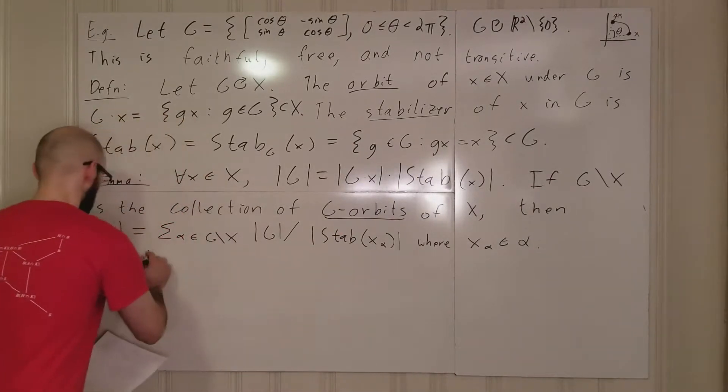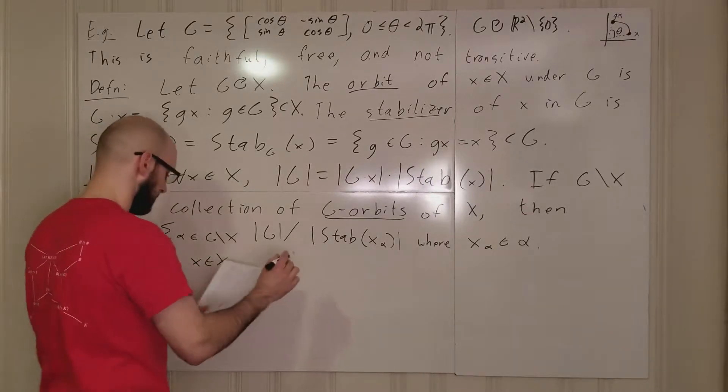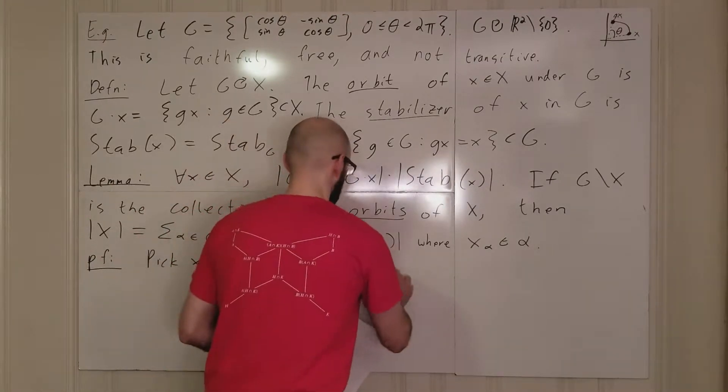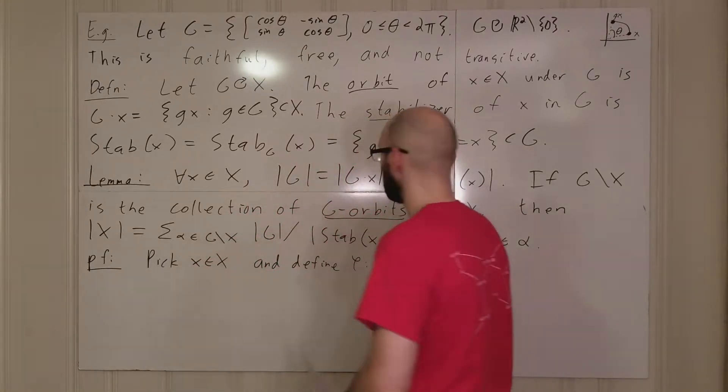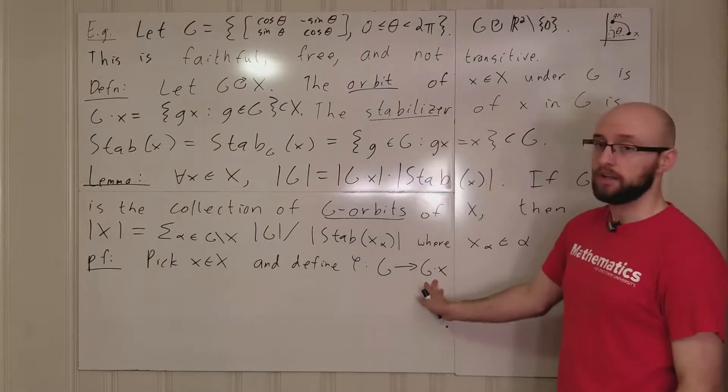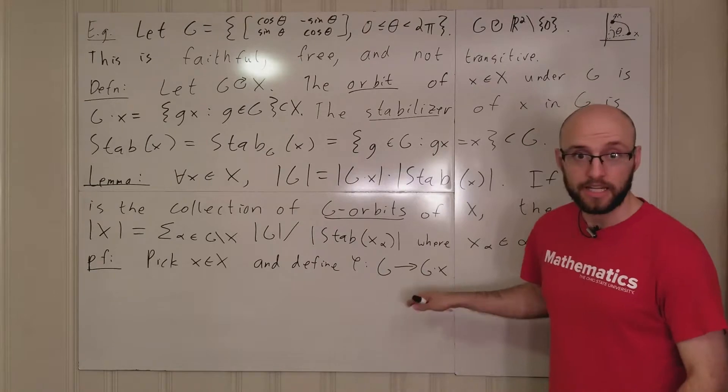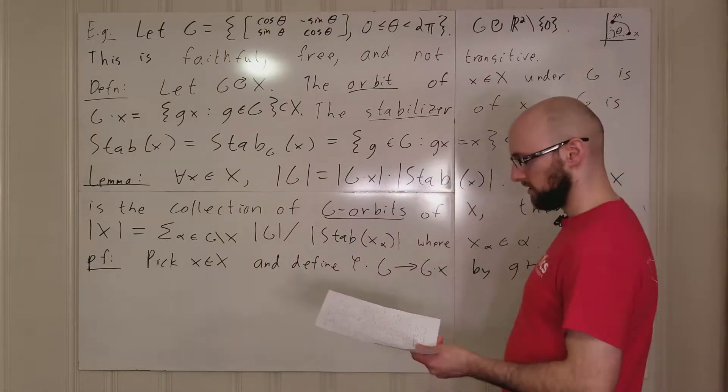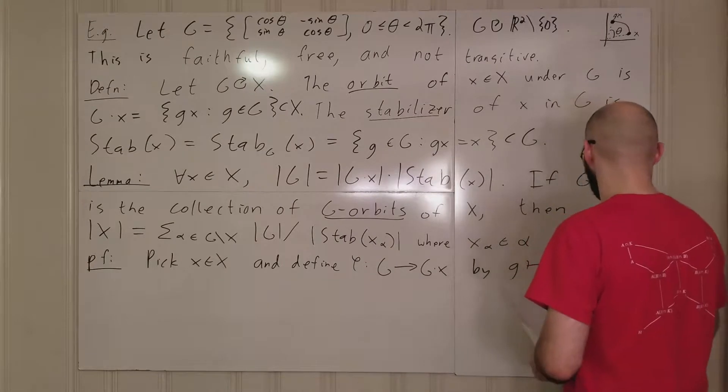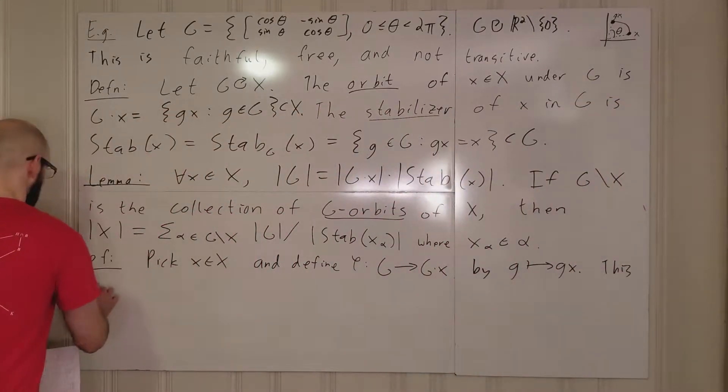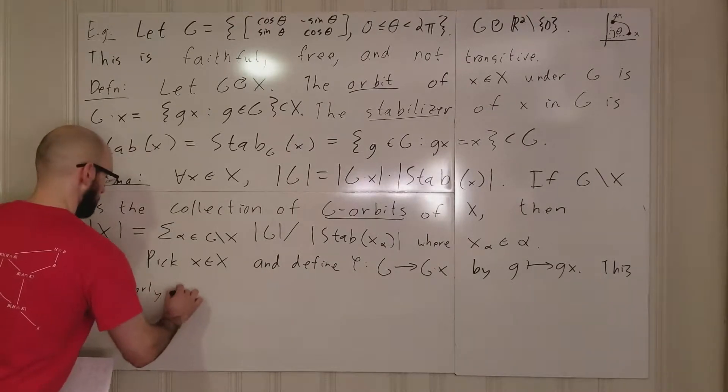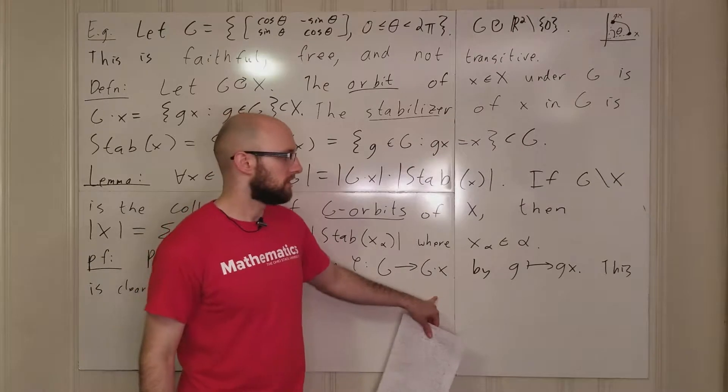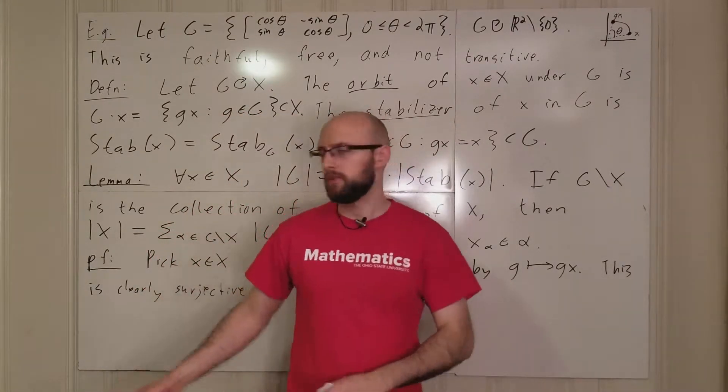For the first part, I'm going to pick some x in x and define phi going from g to the orbit of x under g. So it's going from g into x and it's defined by g is going to map to gx. What do we know about this map? This, it's clearly surjective.